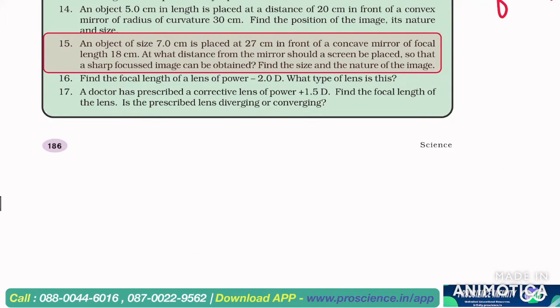Look, object of size 7 cm, h is equal to 7 cm, is placed 27 cm in front of a concave mirror. So u is minus 27 cm, at what distance should it be placed so that a sharp focused image can be obtained. Focal length is minus 18, concave mirror, focal length negative.